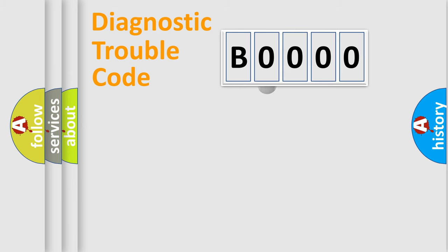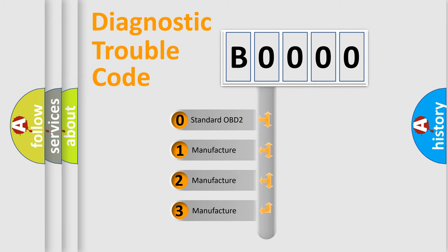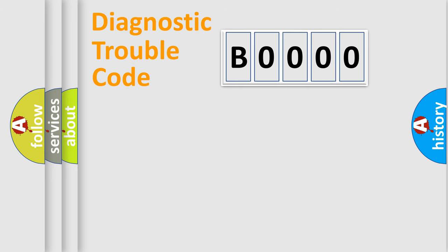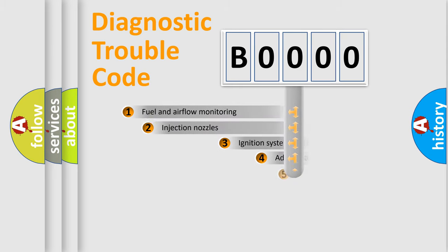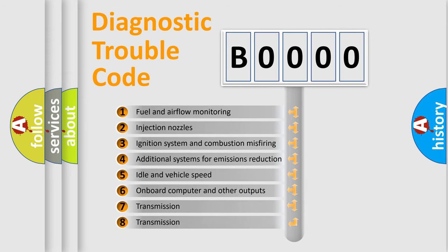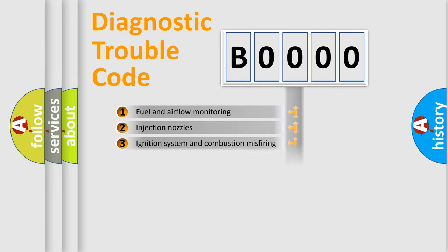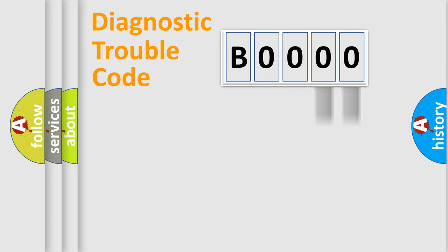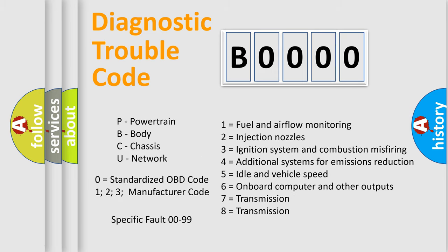This distribution is defined in the first character of the code. If the second character is expressed as zero, it is a standardized error. In the case of numbers 1, 2, or 3, it is a more specific expression of a car-specific error. The third character specifies a subset of errors. The distribution shown is valid only for the standardized DTC code. Only the last two characters define the specific fault of the group. Note that this division is valid only if the second character is expressed by the number zero.